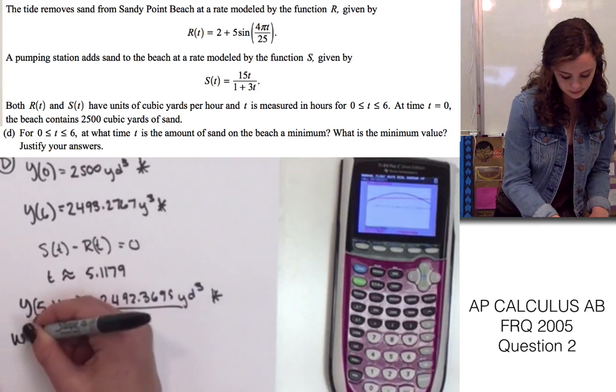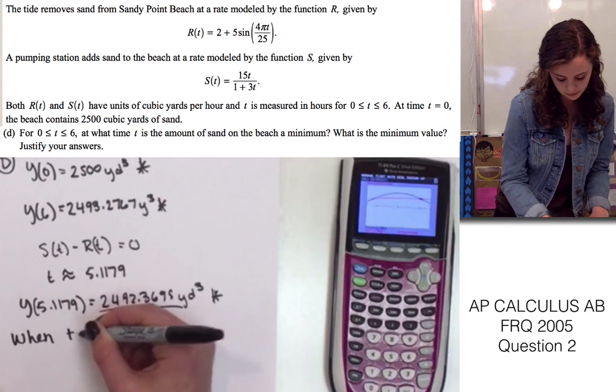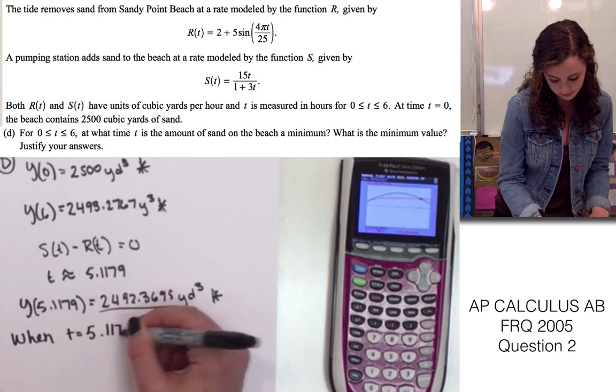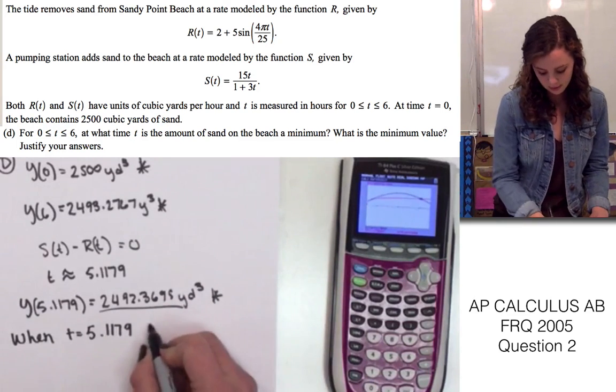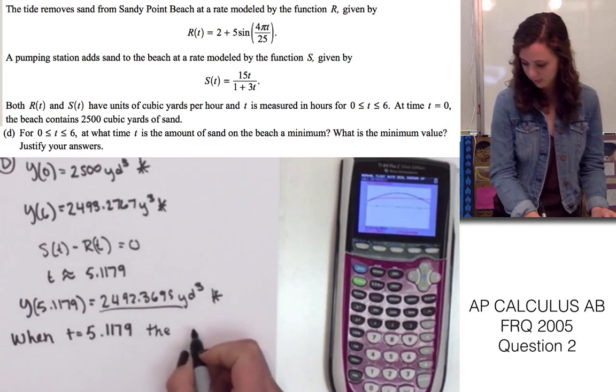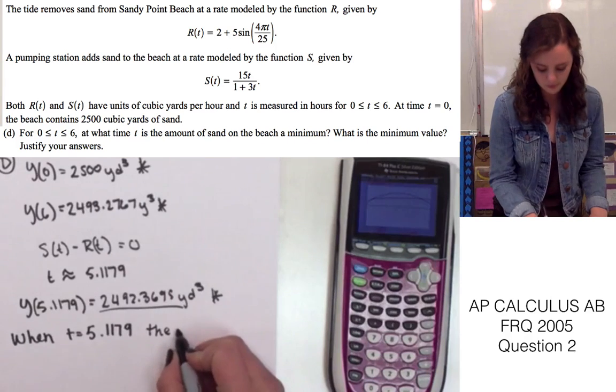When t is equal to 5.1179, the volume of sand on the beach is at the minimum.